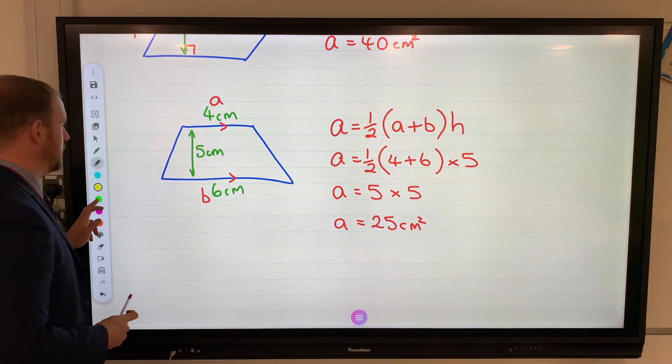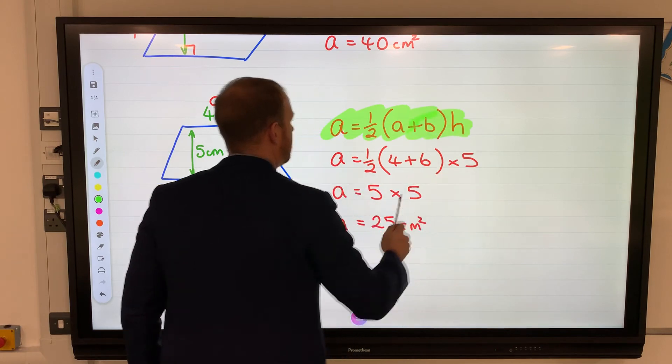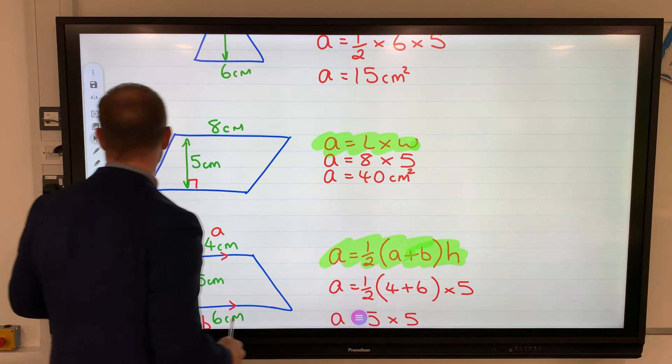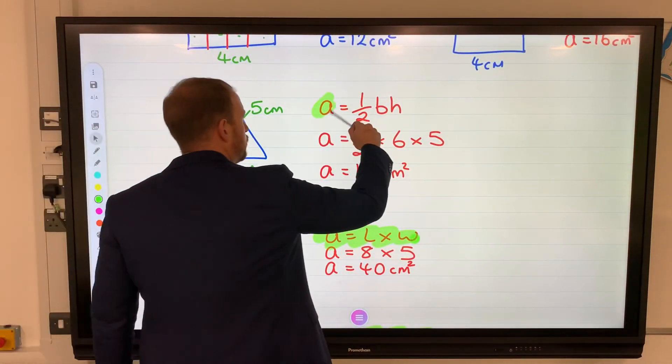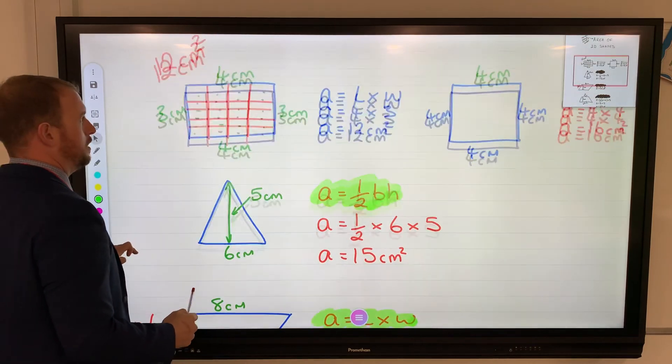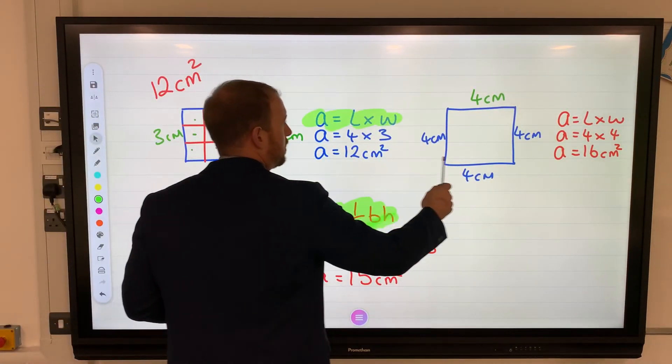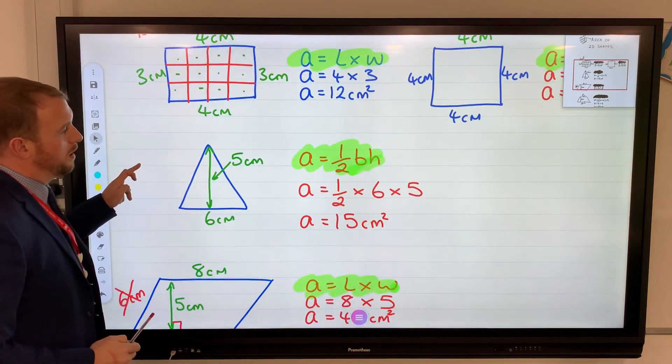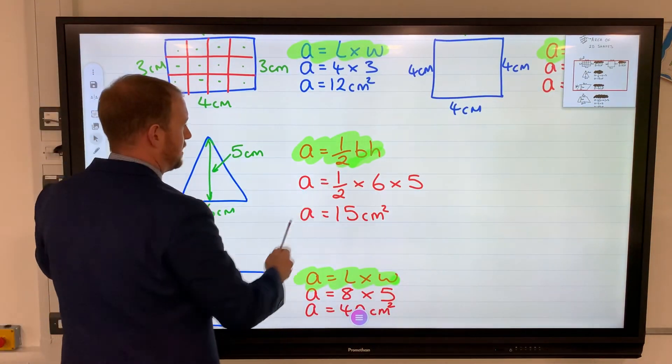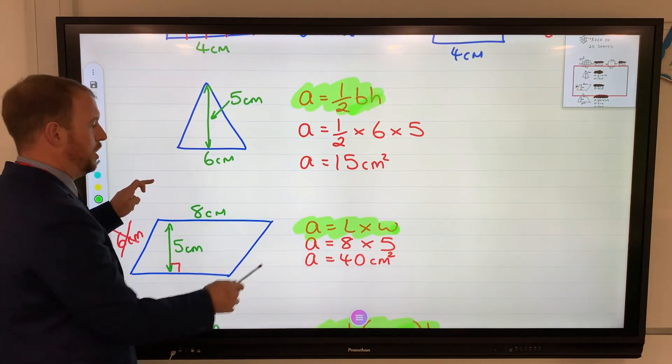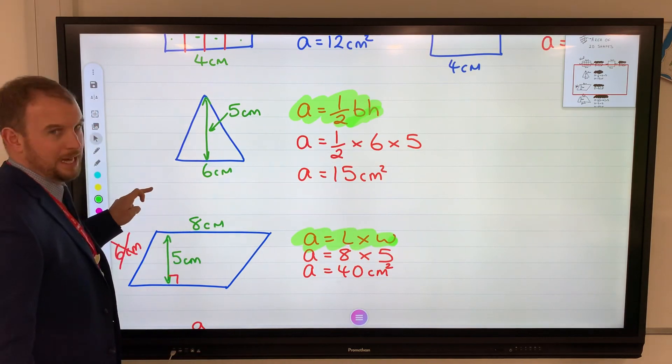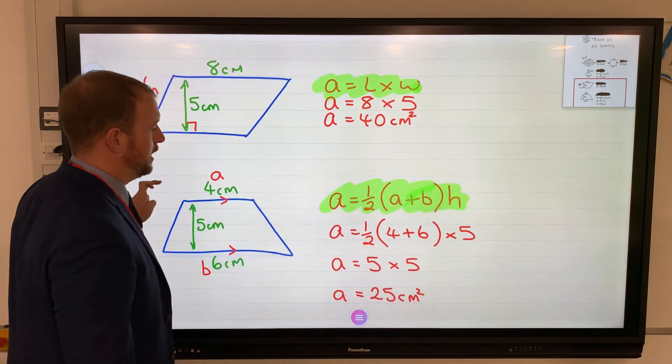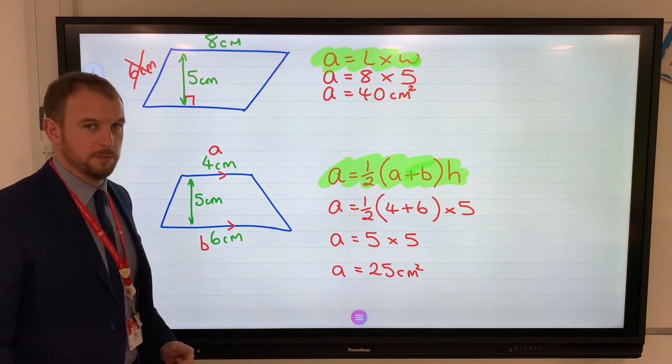So we've got parallelogram, triangle, rectangle, and square. Make a note of them. Obviously be careful what the letters stand for: b stands for base, h is for height. You'll notice that a is in front of all of them because we are calculating the area. Make a note of them, keep practicing. Practice makes perfect. Hope it helps.